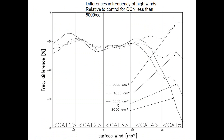Looking at surface winds, going from 2,000 to 4,000, 8,000, and up to 8,000 per cubic centimeter concentrations released by the aircraft. It's really heavily loaded with this material. These are the different category winds and the probability density function of the winds changing in response to seeding. We do see, first of all, a reduction in intensity of the storm.